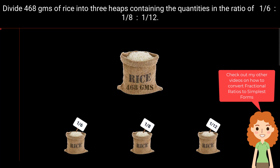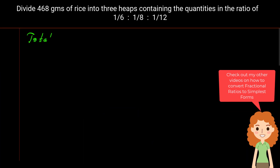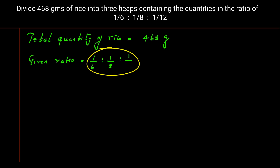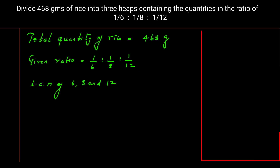Let's start. Total quantity of rice is equal to 468 grams, and the given ratio is 1/6 : 1/8 : 1/12. This is a fractional form of ratio. To convert it into the simplest form, we need to calculate the LCM of the denominators 6, 8, and 12.